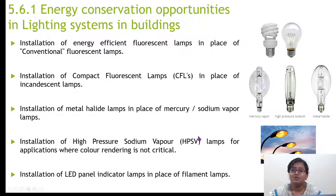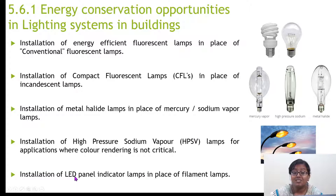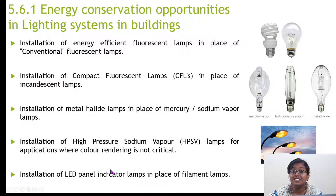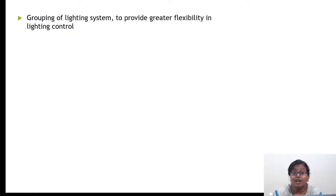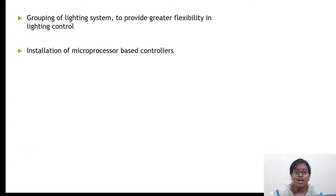We used to use filament lamps to see if a phase is on or off, but now these have been replaced with LED panel indicators. This is how you can conserve energy via lighting systems. You can also have grouping of lighting systems to provide greater flexibility in lighting control.